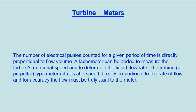A tachometer can be added to measure the turbine's rotational speed and to determine the liquid flow rate. The turbine, or propeller, type meter rotates at a speed directly proportional to the rate of flow, and for accuracy the flow must be truly axial to the meter.